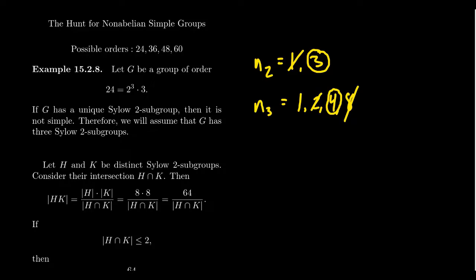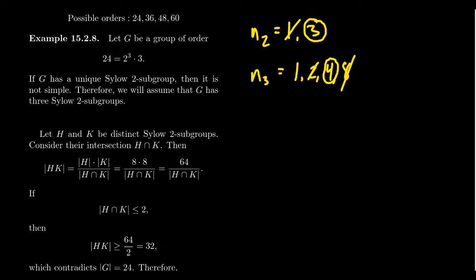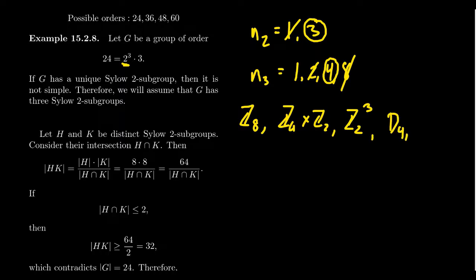24 gets a little bit more confused in that regard, so we're going to have to take a different approach. Because if you look at the Sylow 2-subgroups, what type of groups are there of order 8? Sure, there's some abelian groups — Z8, Z4 cross Z2, the elementary abelian group Z2 cubed. But you also have some non-abelian groups, like the dihedral group and the quaternion group. There are five possibilities just for those. D4 has five elements of order 2 and two elements of order 4. Q8 has six elements of order 4 and one element of order 2. Z2 cubed has seven elements of order 2. Z8 has four elements of order 8 and two elements of order 4. So if we're trying to count elements of order 2, 4, and 8, it gets a lot harder because there are so many possibilities.